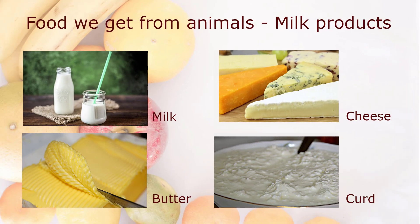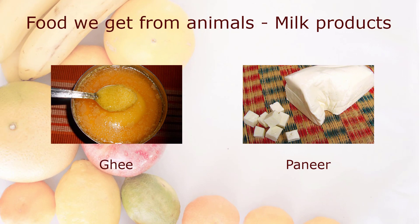Food we get from animals — Milk products: milk, cheese, butter, curd, ghee, and paneer.